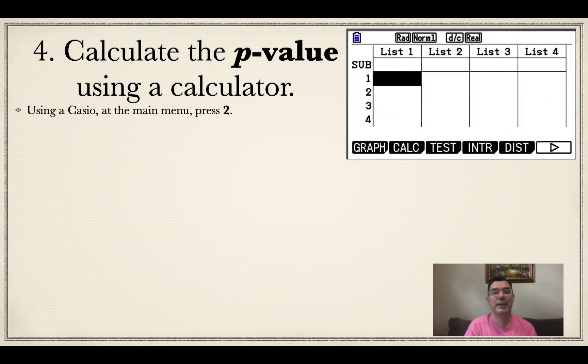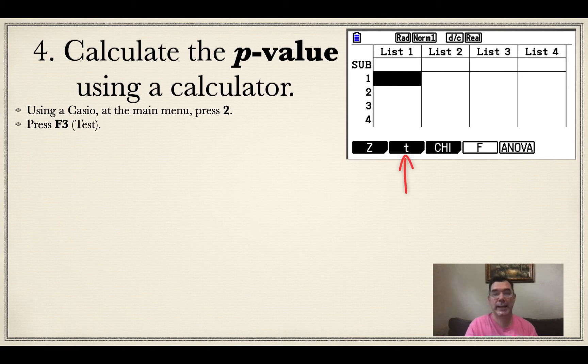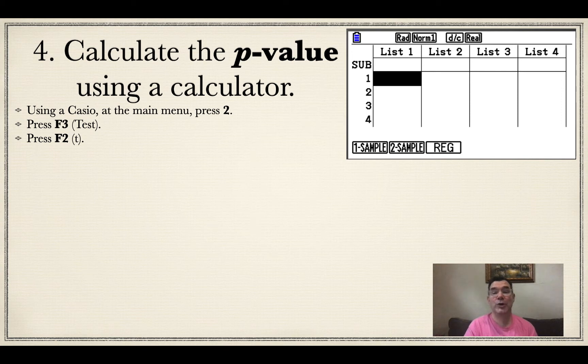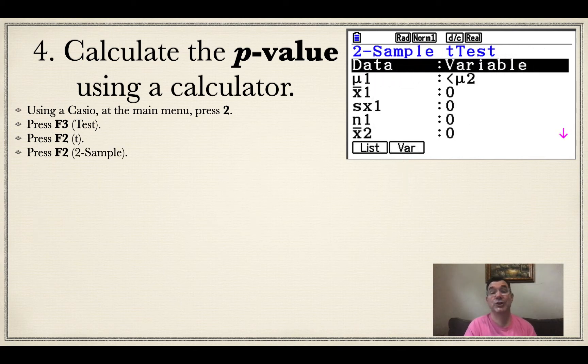Again, from the main menu, I press 2 to go to statistics. I could enter a list of data if I had it, but I don't. All I have is the average standard deviation and the number of people that were in each sample. So I press F3, which is test. There is the t-test option right there for F2. And now notice I have two samples. So I'm not going to do a one sample t-test. I'm doing a two sample t-test. So that is F2 instead.